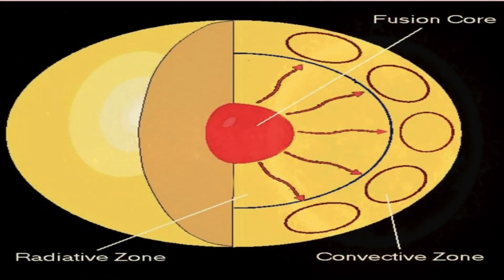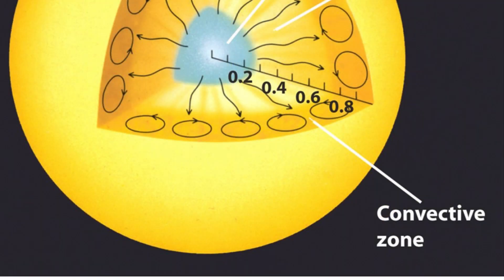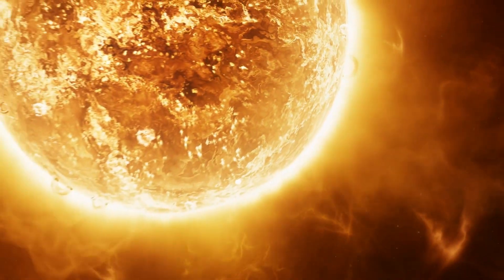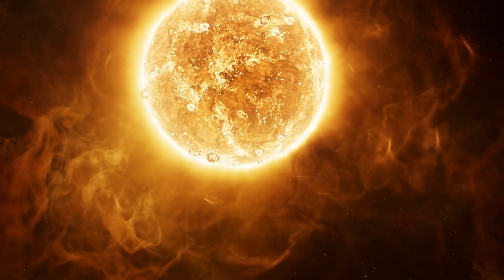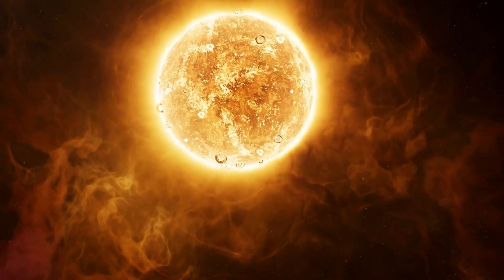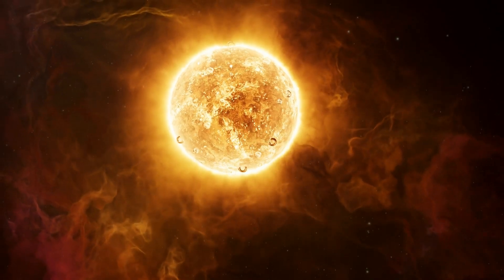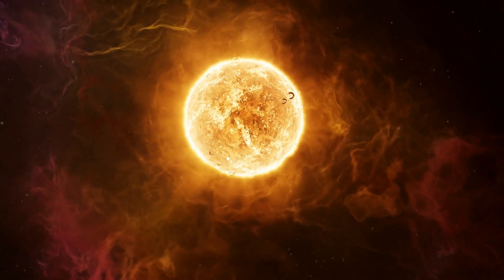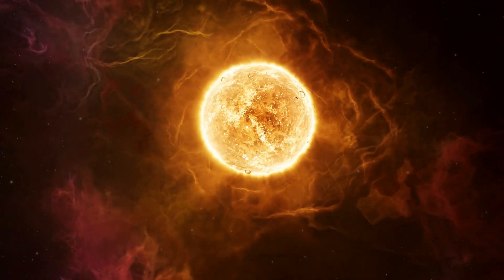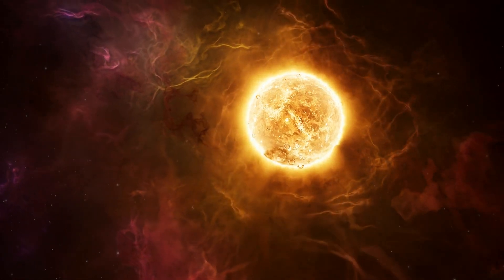The Convective Zone sits above the radiative zone, where the temperature drops to around 2 million degrees Celsius at the top, down to around 5,500 degrees Celsius at the base. This layer is where heat is transported by convection currents. Hot plasma rises toward the surface, cools down, and then sinks back into the lower layers in a continuous cycle.